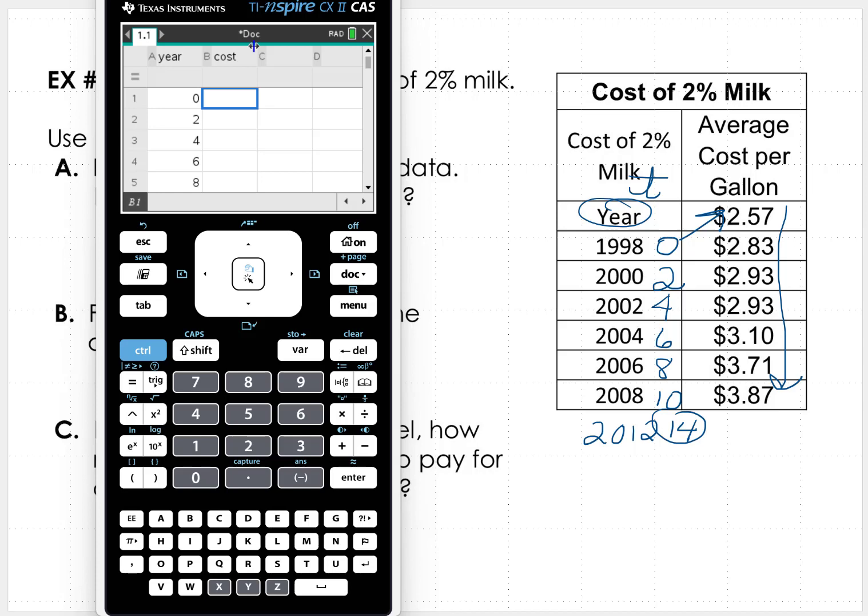So 257 is 1998. And then 283 is 2000. 293 is 2002. 293 again is 2004. 310 is 2006. 371. And then finally 387.